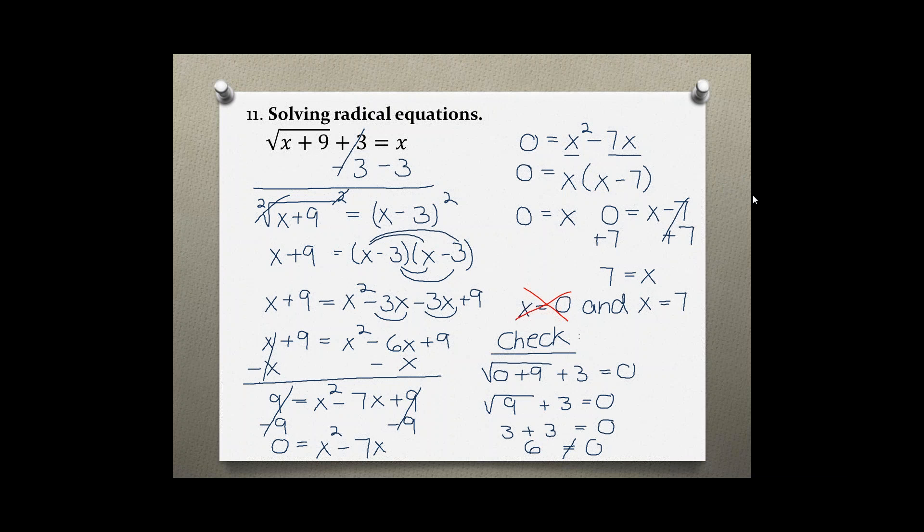Now I'm going to have to plug in my second answer to see if that one works out. So the square root of 7 plus 9 plus 3 is supposed to be 7. 7 plus 9 is 16 plus 3 equals 7, and the square root of 16 is 4 plus 3 equals 7.